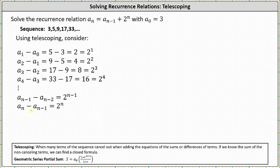We can determine the difference by analyzing the pattern of the other differences or by subtracting a_{n-1} from both sides of the recurrence relation. The difference right before this is a_{n-1} minus a_{n-2} equals two to the power of n minus one. Now we add these equations together, and notice most terms cancel out — a_1 minus a_1 is zero, a_2 minus a_2 is zero, a_3 minus a_3 is zero, and so on. The a_{n-1} minus a_{n-1} also simplifies out, leaving us with negative a_0 plus a_n on the left.